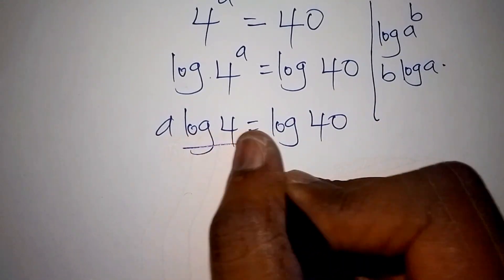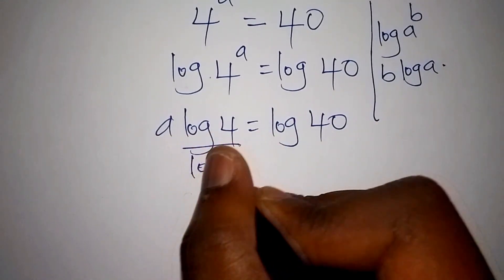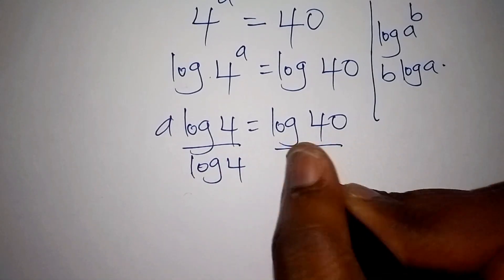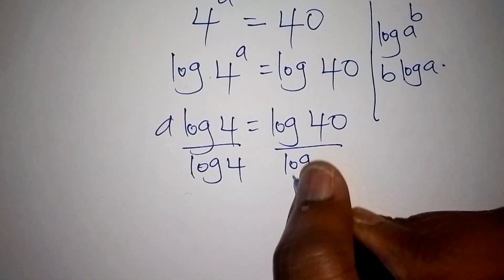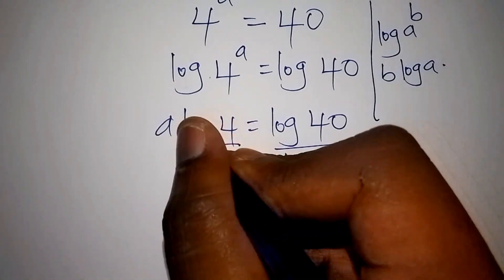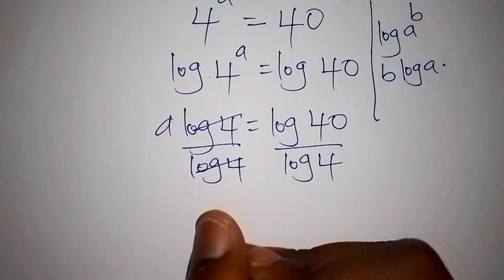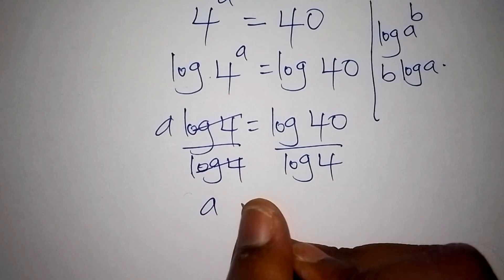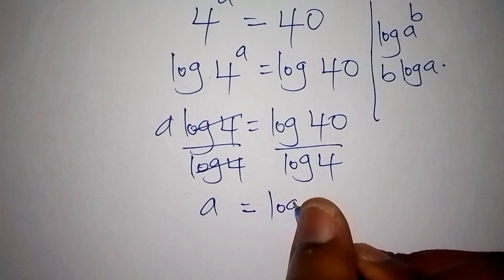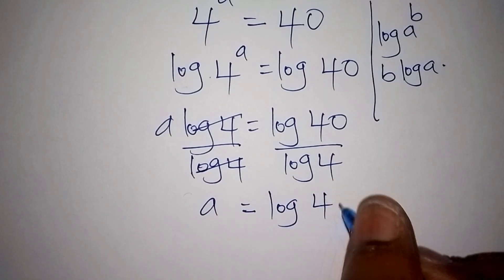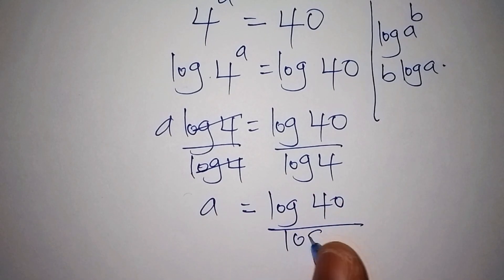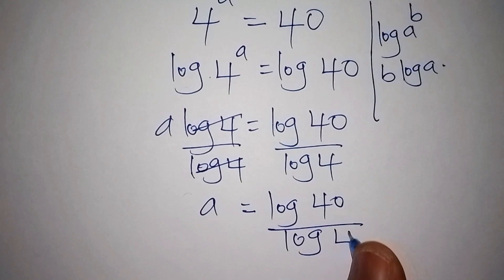So now we shall have a times log of 4 is equals to log of 40. From here we shall divide both sides by log of 4, and log 4 over log 4 shall cancel. So our value for a is equals to log of 40 over log of 4.